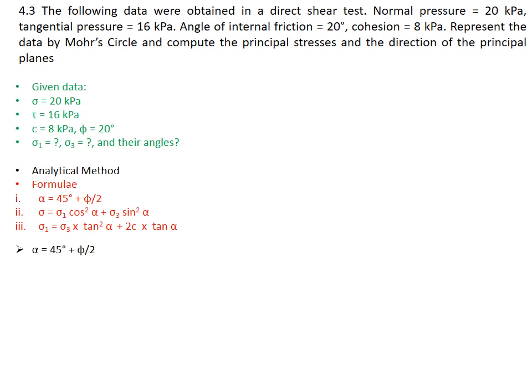With the help of these three formulas we can find out sigma 1 and sigma 3. Moving with the first formula to find alpha, putting the value of phi, you will get alpha as 55 degrees. Then moving on to the next second formula, we have sigma and the value of alpha, so putting 20 and alpha as 55 we get equation A where the unknowns are sigma 1 and sigma 3.